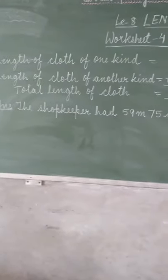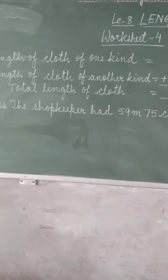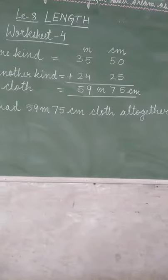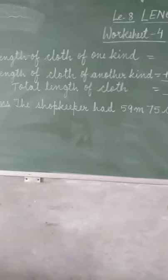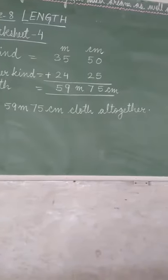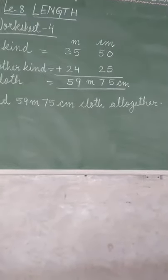Now all together means you have to add the total length of cloth. I have added 59 meter, 75 centimeter. So the shopkeeper had 59 meter, 75 centimeter cloth all together. Okay children.